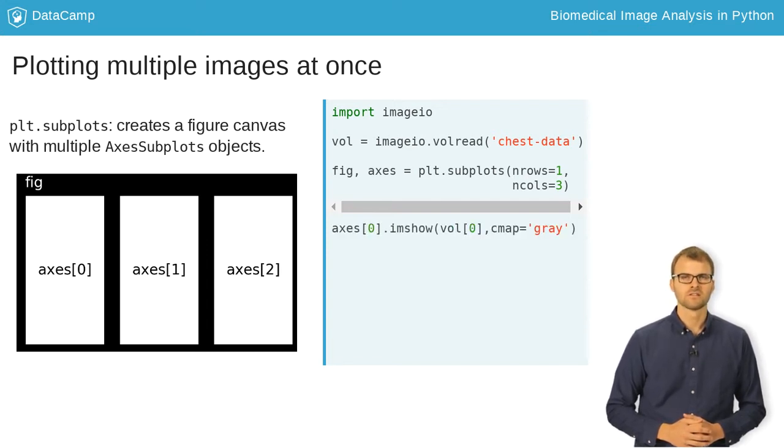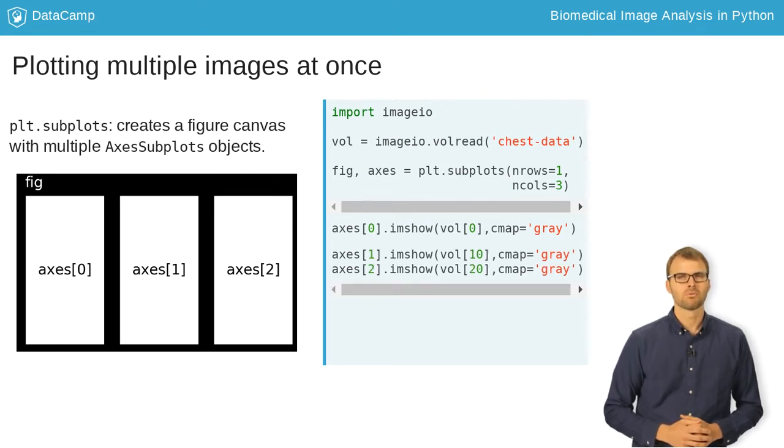To draw images on each subplot, we will call the imshow function directly from the axis object, rather than calling it through PyPlot. Here, we're plotting the first slice of vol with a gray color map. After the first slice is drawn, repeat the process for the other slices.